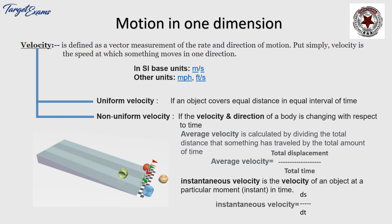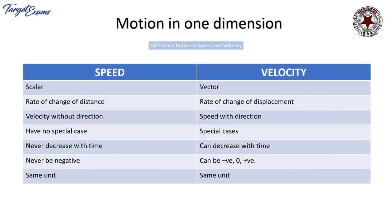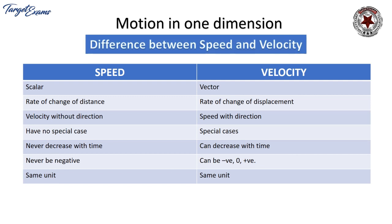Differentiating speed and velocity: speed is scalar and velocity is vector, because velocity uses displacement and speed uses distance. The rate of change of distance is called speed; the rate of change of displacement is called velocity. Speed is always positive and can never be negative. Velocity can be negative, zero, or positive. Speed never decreases with time; velocity can decrease with time. Both have the same units.